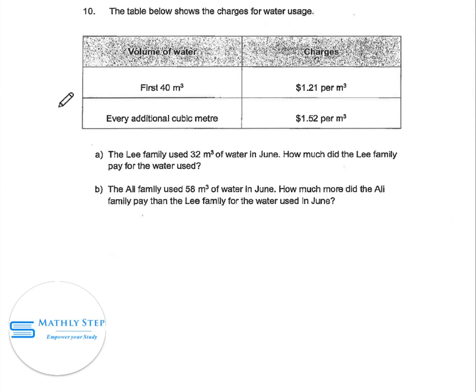Question 10. The table below shows the charges for water users. First 40 cubic meters, it charges $1.21 per meter. Every additional cubic meter, it charges $1.52 per meter cubed.